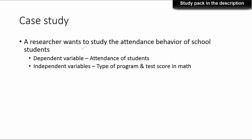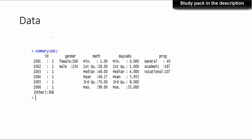A researcher wants to study the attendance behavior of school students. The dependent variable is attendance of different students, and the independent variables are the type of program a particular student is enrolled in and their score in maths. So there are two independent variables. The independent variable is actually the number of days of absence by a student. Here is the data.